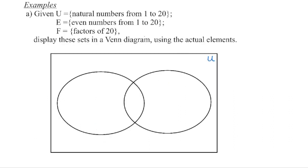In our first example, we're given information about sets and asked to display it in a Venn diagram by listing the actual elements. We begin with our universal set, labeled U, which contains all natural numbers from one to 20. Natural numbers are the positive whole numbers beginning with one, two, three, et cetera, so we can list those out — there will be 20 of them.